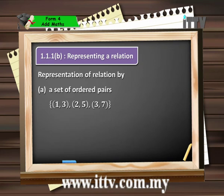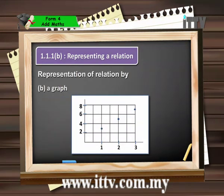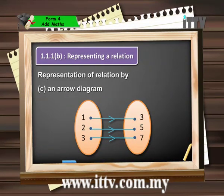Alternatively, we can represent these ordered pairs as coordinates on a graph. As you can see from the graph in this diagram, we have the points (1,3), (2,5), and (3,7) labelled on the graph — this is how we show a relation using a graph. Finally, we also have the option of an arrow diagram. Notice how the left bubble contains the values 1, 2, 3 and the right bubble contains 3, 5, 7, with arrows indicating the ordered pairs (1,3), (2,5), and (3,7) respectively.